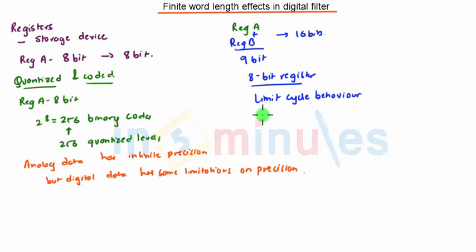This effect of truncation or rounding can be represented in terms of an error signal, which is called round-off noise.